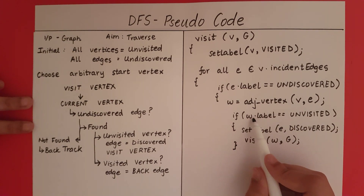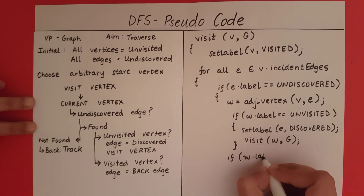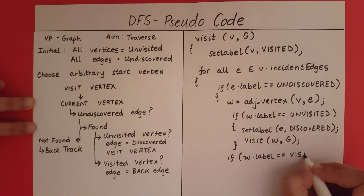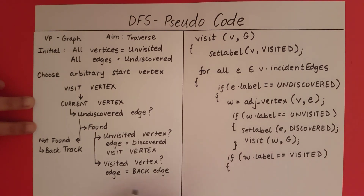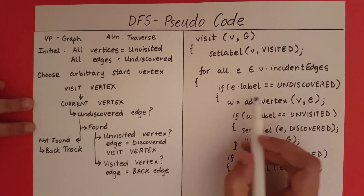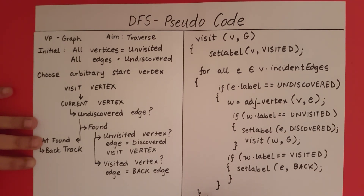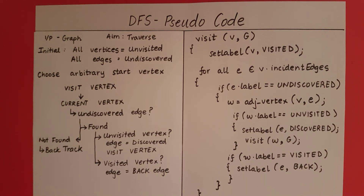If W was unvisited we visit it. What if W was already visited? In that case we set the edge to a back edge — setLabel(E, back). So that covers what we do when the edge is undiscovered. We do this for all incident edges. When the for loop completes, none of the incident edges are undiscovered, so we need to backtrack — which is implemented simply by closing the function.